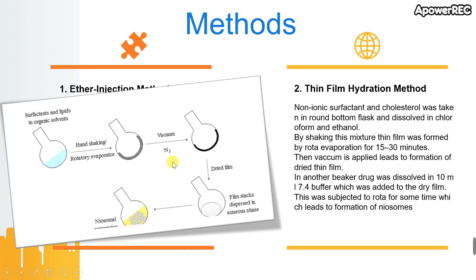The second method is thin film hydration. In this method, a round-bottom flask containing non-ionic surfactant and cholesterol dissolved in chloroform and methanol was used. By shaking, a thin film was formed by rotary evaporation at 50 to 100 rpm for 30 to 50 minutes. Vacuum was then applied for one hour at 600 mmHg pressure, leading to formation of a dried thin film. In a separate beaker, the drug was dissolved in 10 ml of pH 7.4 buffer and added to the dry film.